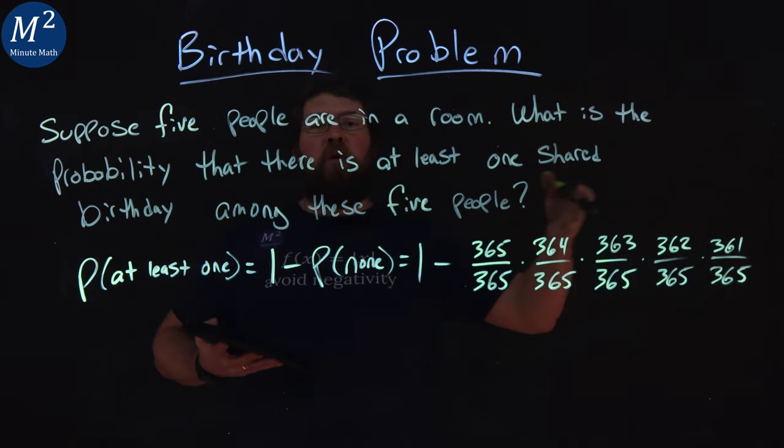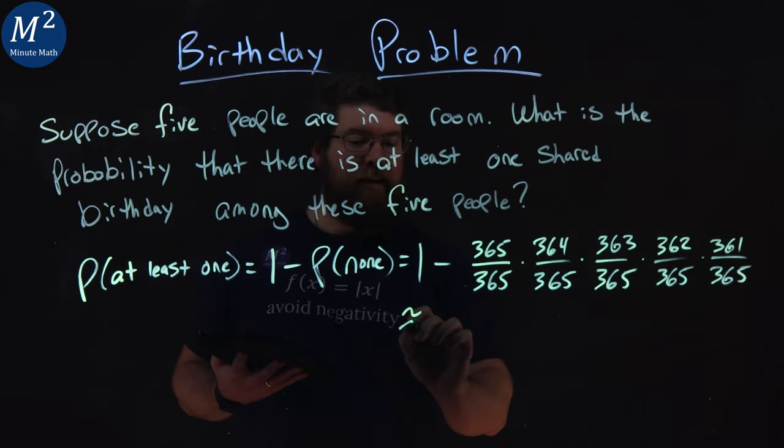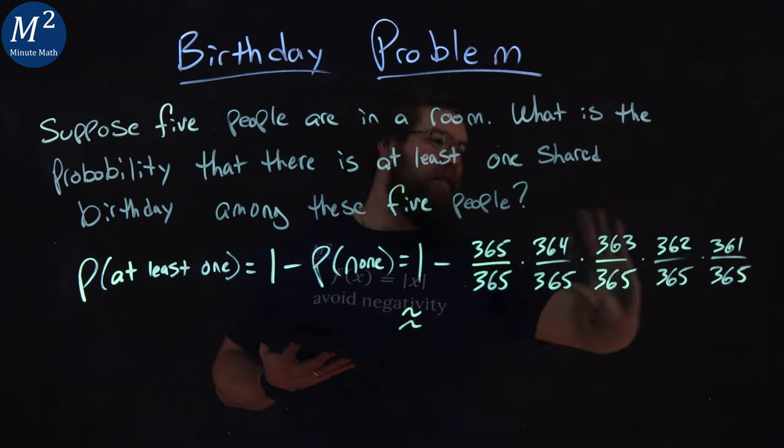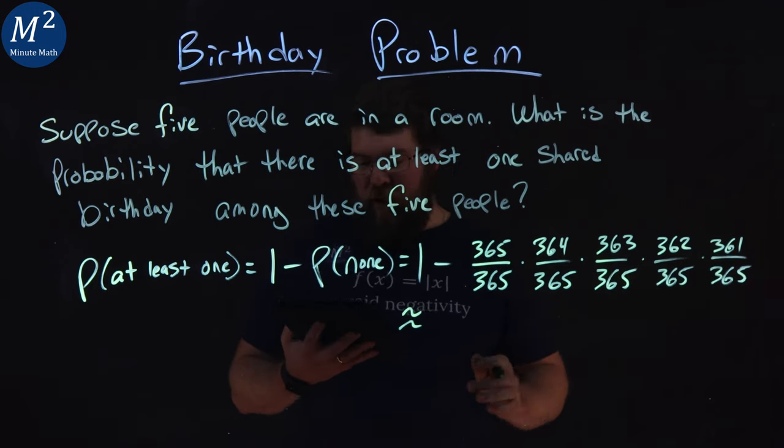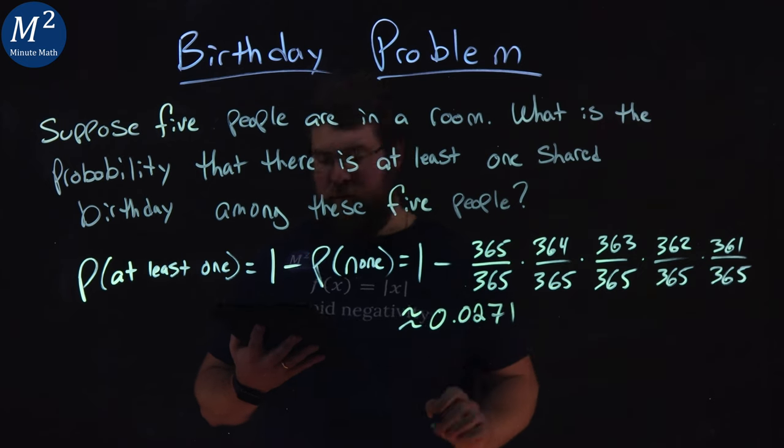So now we can multiply this all out. And I'll save you the math there. But one minus this multiplied out comes out to be approximately 0.0271.